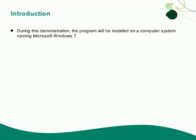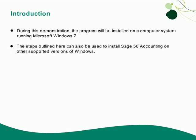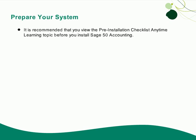During this demonstration, the program will be installed on a computer system running Microsoft Windows 7. However, the steps outlined here can also be used to install Sage 50 on other supported versions of Windows. Before installing Sage 50 Accounting on a server, it's a good idea to make sure that your computer system is properly prepared for the installation. To learn tips that will help ensure a successful installation of Sage 50, it is recommended that you view the pre-installation checklist Anytime Learning Topic before you install the program on your server.